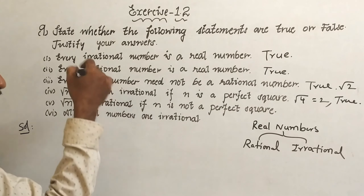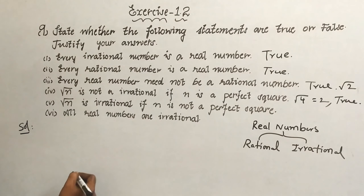Come to the fifth one: root n is irrational if n is not a perfect square. If n is not a perfect square, take root 2 — 2 is not a perfect square, and root 2 is an irrational number. So this is also true.